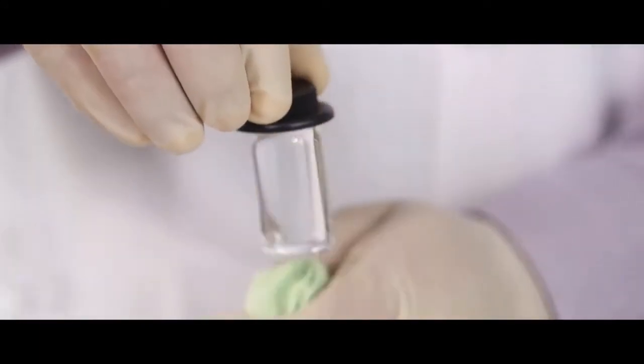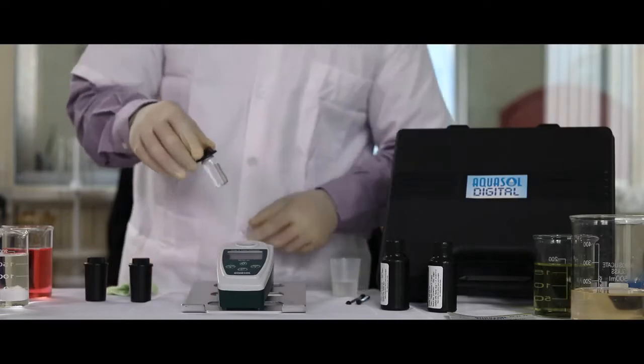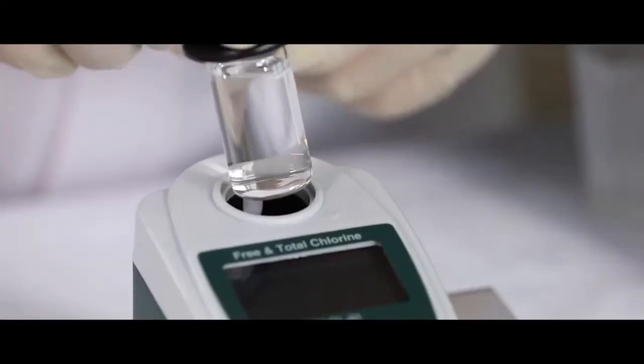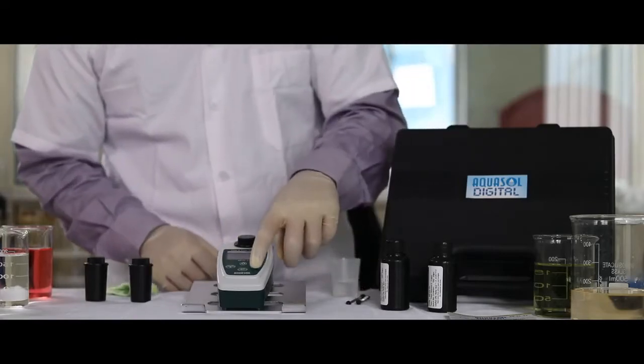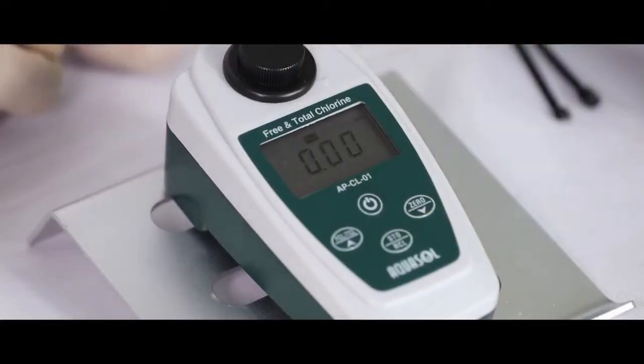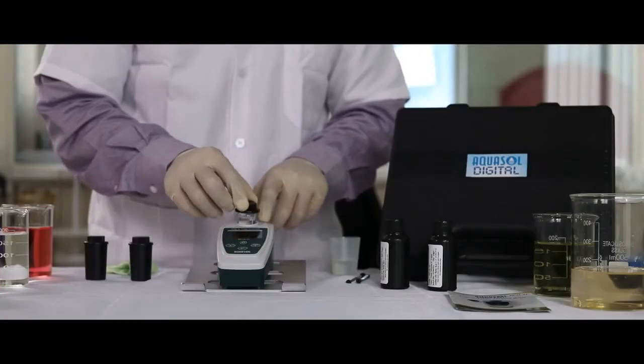Clean the exterior of the bottle. Align the line on the bottle with the arrow on the meter. Press 0 key for calibration. Once the display shows 0.00,